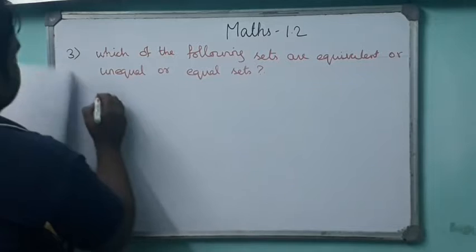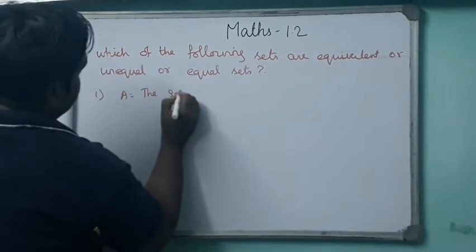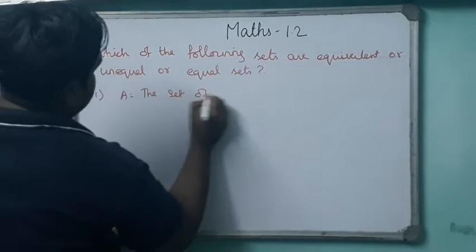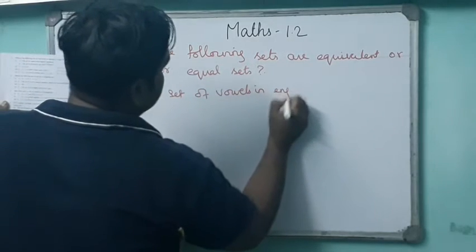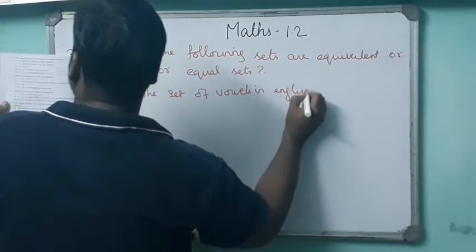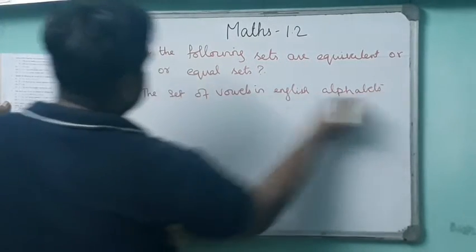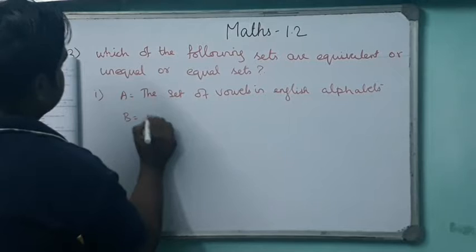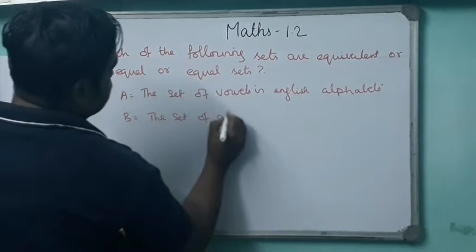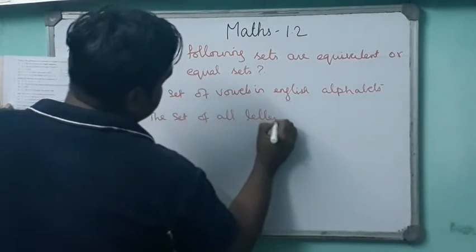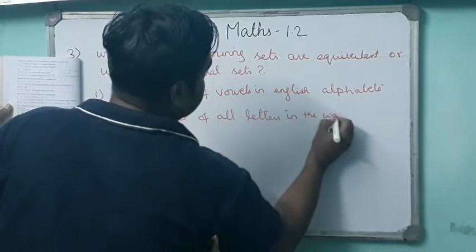Look at the first question. Set A equals the set of vowels in English alphabets, and set B equals the set of all letters in the word 'vowel'.